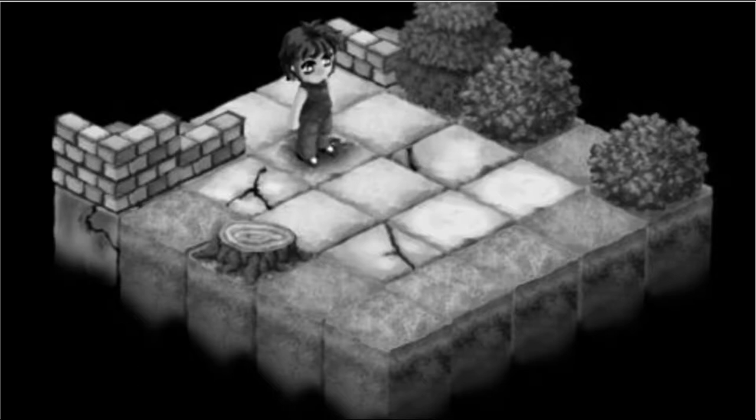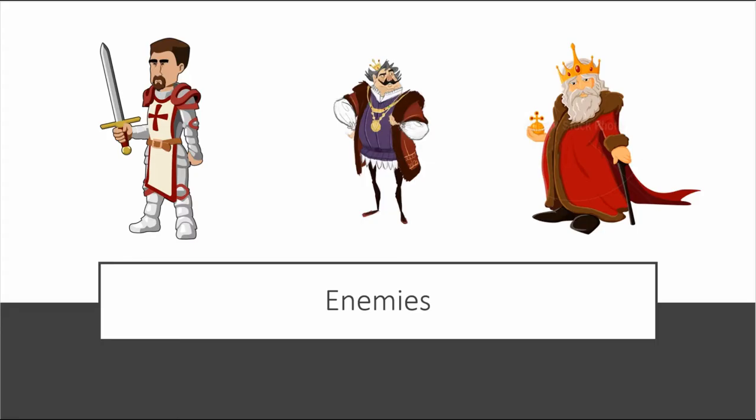The game will be isometric 2D from the top down. This gives the viewing perspective of the whole stage and all important player information. The antagonizing force of the game will be AI-controlled corrupt soldiers, nobles, and royalty.